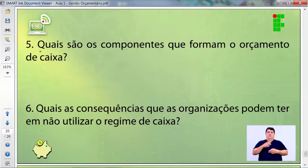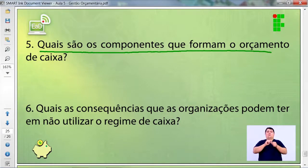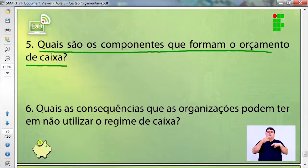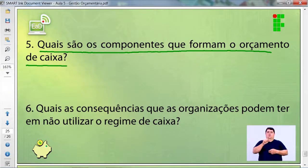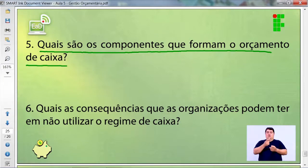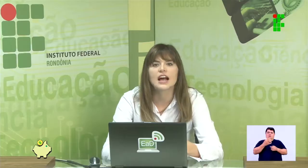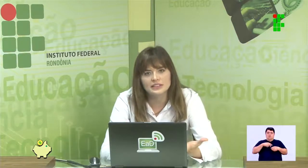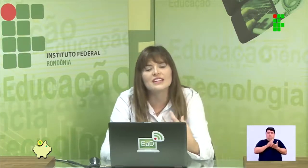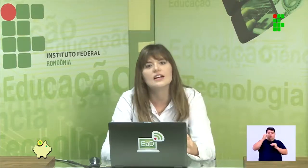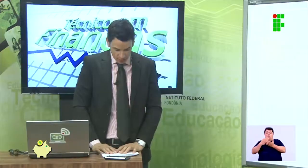Quinta pergunta: quais são os componentes que formam o orçamento de caixa? Respostas de Cerejeiras, Nova Brasilândia, Nova Mamoré: saldo inicial, diferença do período, saldo final desejado e caixa disponível. O orçamento de caixa tem esses elementos. Temos que controlar o saldo inicial, os elementos que fazem variar esse saldo — nossas diferentes entradas e saídas — e ter controle do inicial e do final.